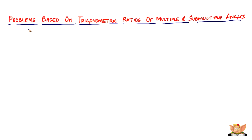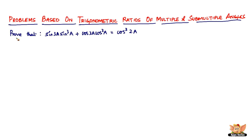In this video, let us continue to solve more problems based on trigonometric ratios of multiple and sub-multiple angles. The problem says: prove that sin(3a)·sin³(a) + cos(3a)·cos³(a) = cos³(2a). It's maybe a little different — not a very straightforward problem.